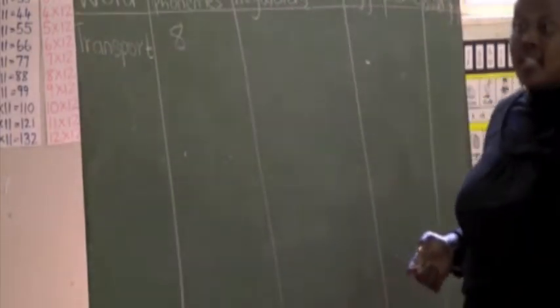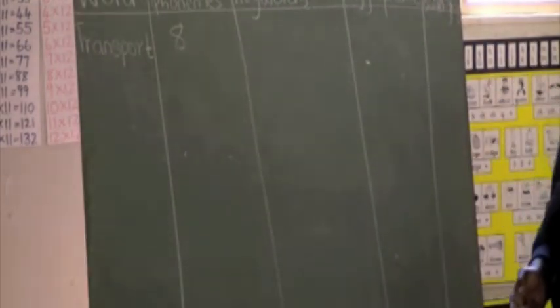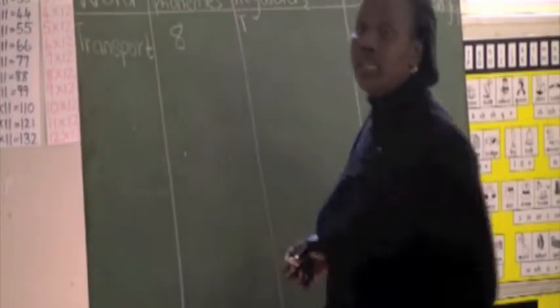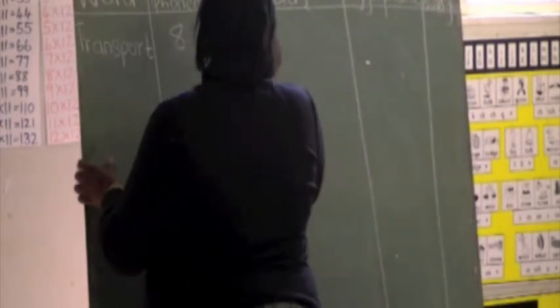There are eight phonemes. That's the T, R, A, N, S, P, O, and T — that's eight. Now, what are the key words for the T? Raise up your hands and give me the answer. That's T for tap.